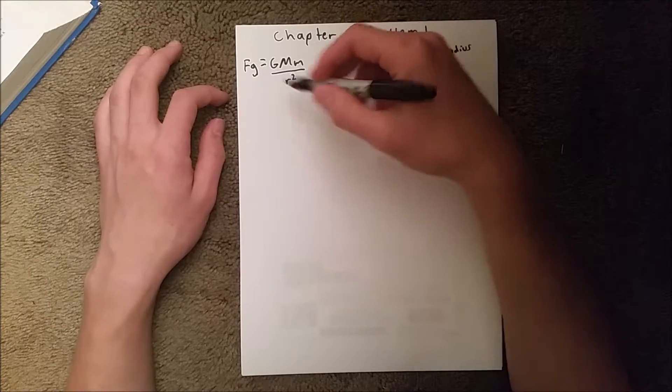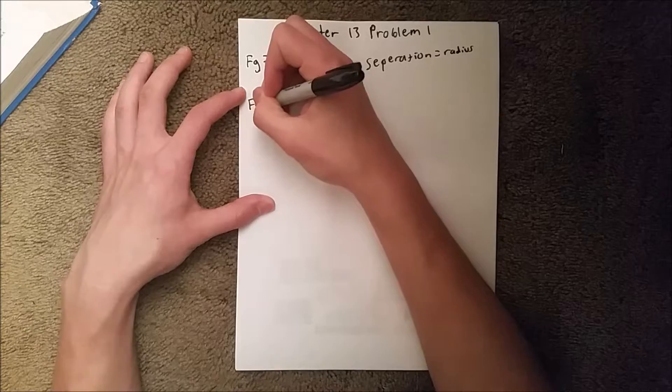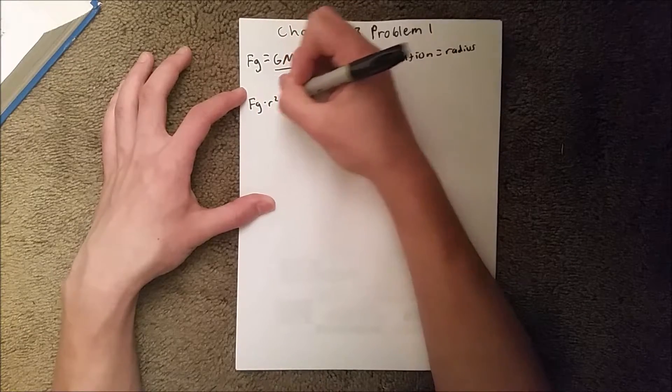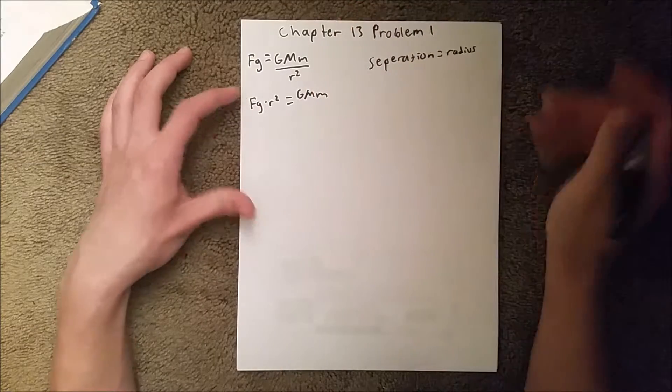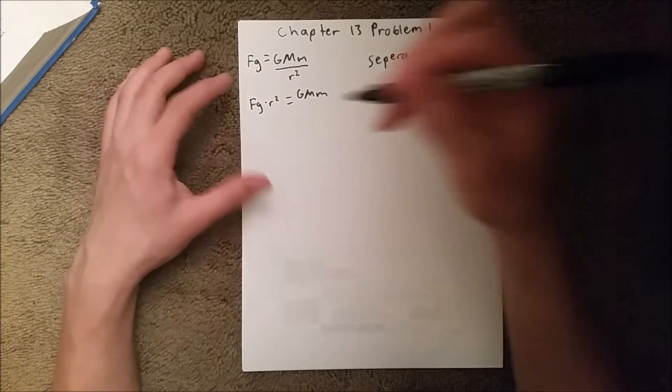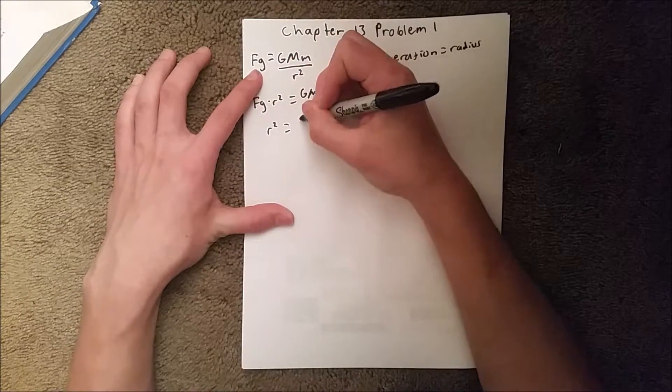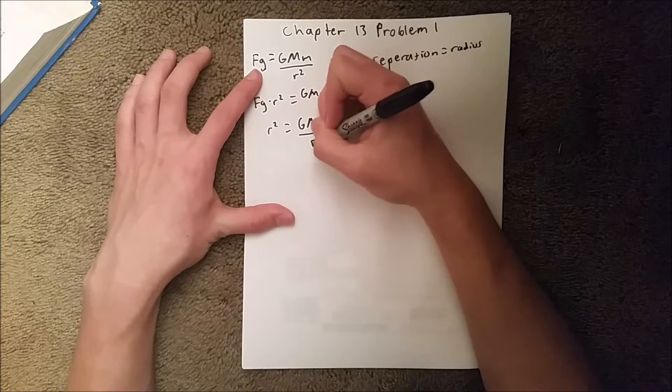First, we'll multiply both sides by r squared, giving us F_g times r squared equals GMm. Then we divide both sides by the force of gravity, which gives us r squared equals GMm over F_g.